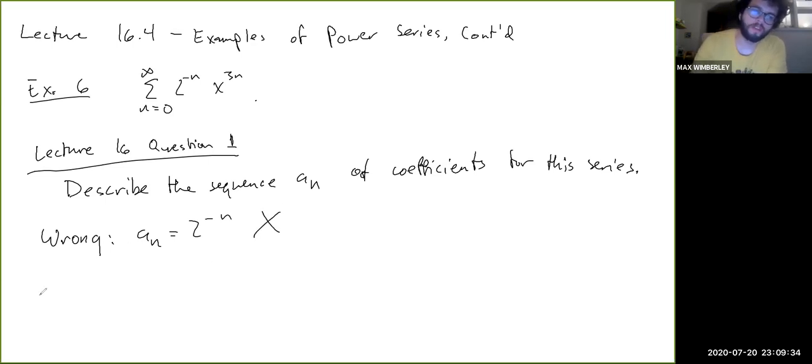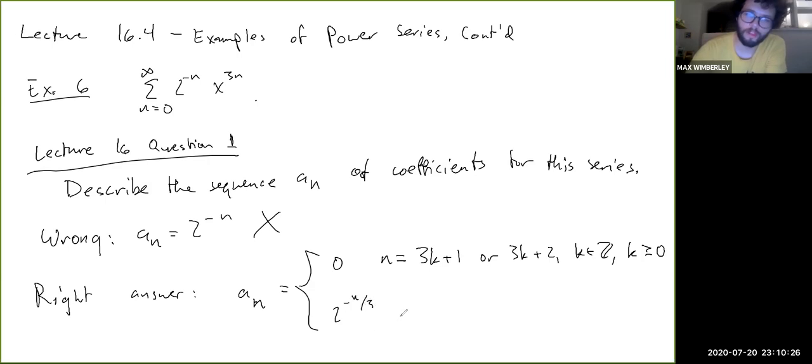Okay, the right answer would be something like a_n equals either 0 if n is, let's see, something like 3k plus 1 or 3k plus 2 for k in the natural numbers. Right. Well, I guess, I don't know. k in the integers and k greater than or equal to 0. And then 2 to the minus n over 3 if n is 3k.